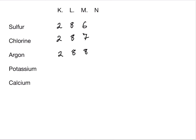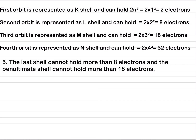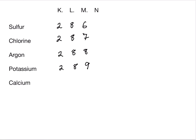Potassium has an atomic number of 19, so 2, 8, 8, and 1. Here again, we can't put 9 in the third shell because the last shell cannot have more than 8 electrons, so that shell has 8 and the last N shell has 1 electron. Calcium has an atomic number of 20, so 2, 8, 8, and 2.